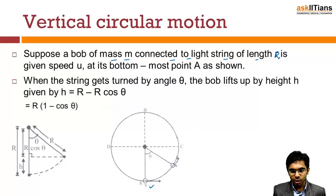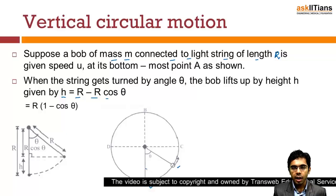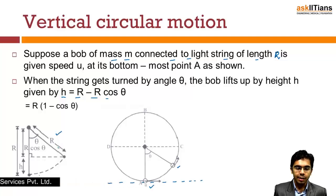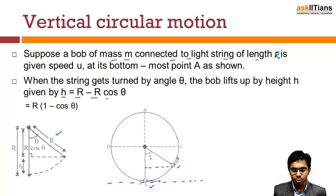When it reaches this position, the bob lifts by height h. We have to find out what this h is. If we take A as the reference line, we need to check how much height it has attained in the vertical direction. From the figure, this height comes out to be h = r - r cos θ, which equals h = r(1 - cos θ).